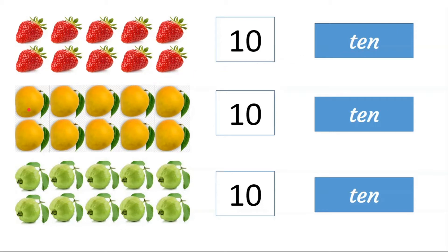How many mangoes are here? 1, 2, 3, 4, 5, 6, 7, 8, 9, 10. 10. T, E, I, G, H.